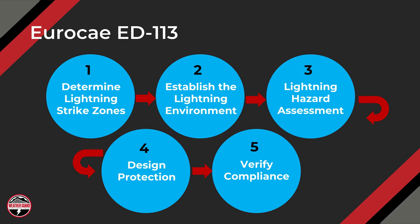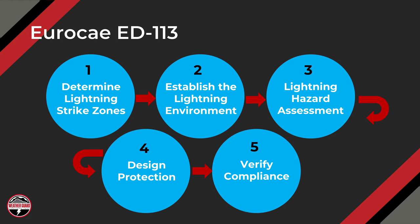What is the process to show compliance to CS25.581? It's outlined in ED-113. I've broken it down into five steps to simplify it, because this is the process I usually follow. In general, this is the process to follow. Step one: determine the lightning strike zones for the aircraft.